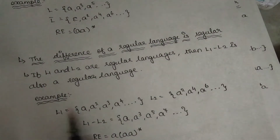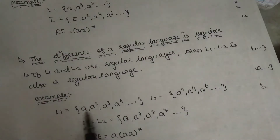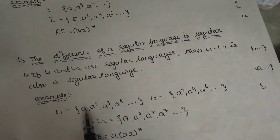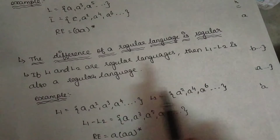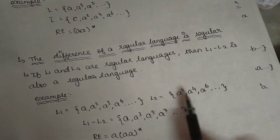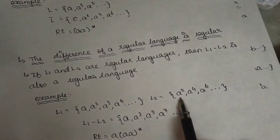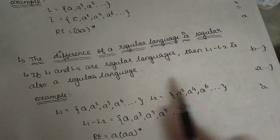If you want to say that, if you choose one of the strings, I will add the regular language, then you can choose any strings. If I say that a, a power 2, a power 3, a power 4, you will say that a power 3, a power 4. Another language that is a power 2, a power 4, a power 6.